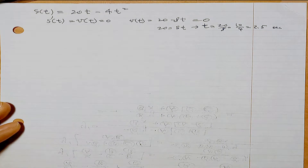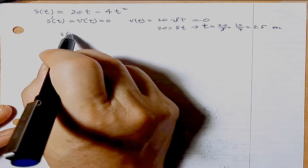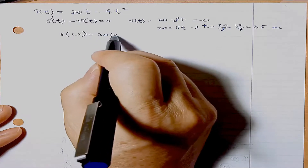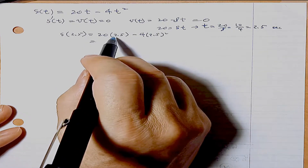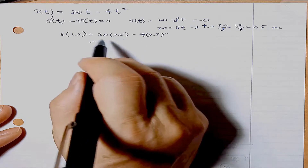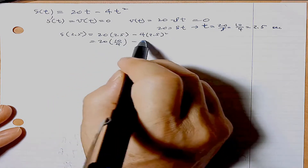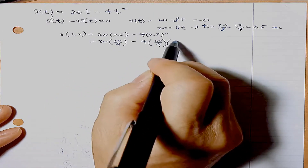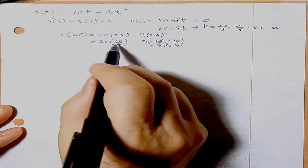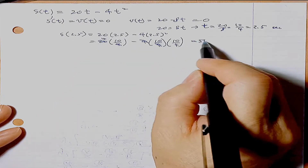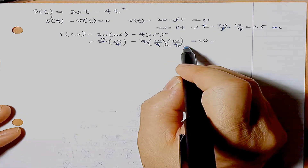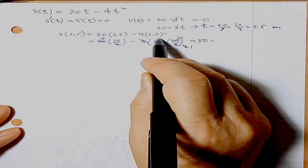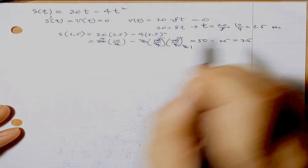At t = 2.5 seconds, maximum height is reached. Substituting into s: s = 20(2.5) - 4(2.5)² = 50 - 4(10/4)² = 50 - 25 = 25 meters. So the maximum height is 25 meters.